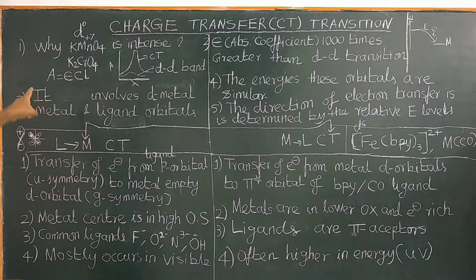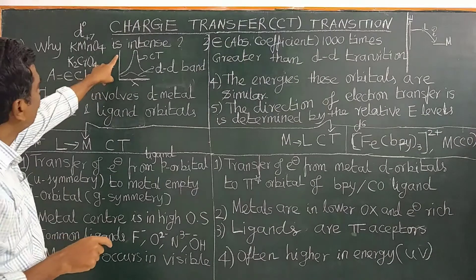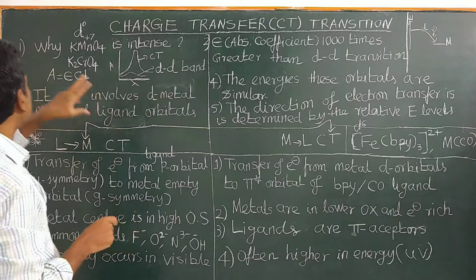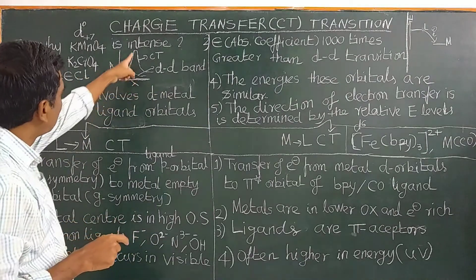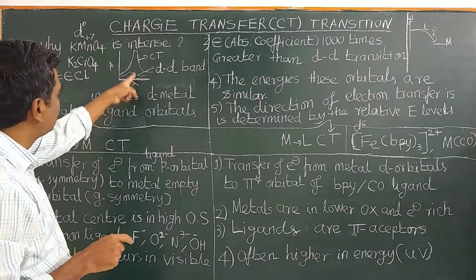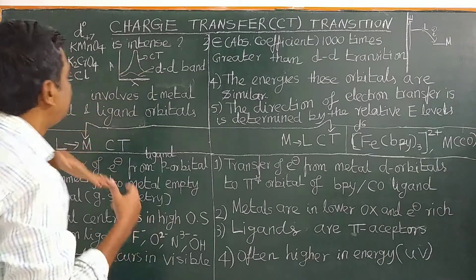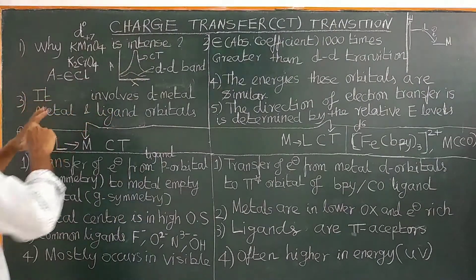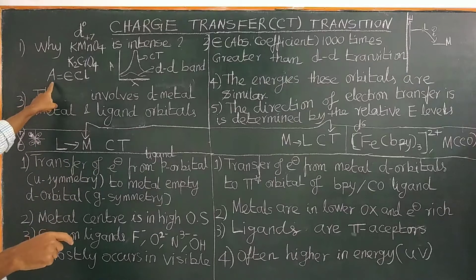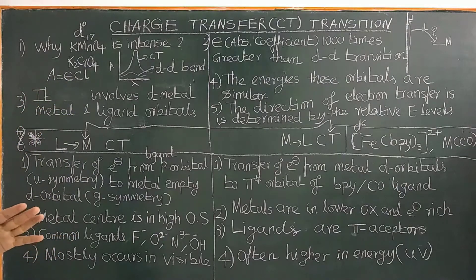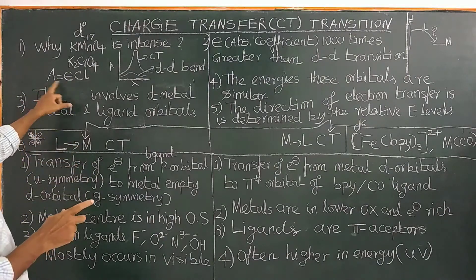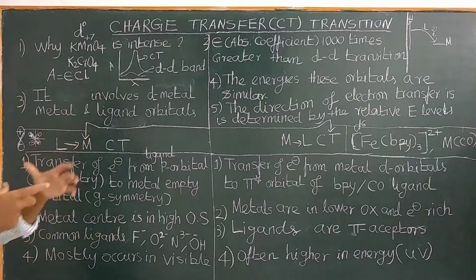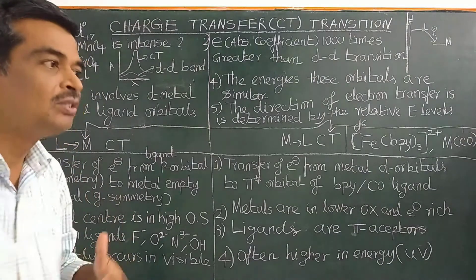Now according to Beer's law, absorbance of a colored solution is directly proportional to its concentration, for a fixed path length of the UV-visible instrument. We have plotted absorption versus wavelength — increasing wavelength. It absorbs at lambda max, the wavelength at which the intensity is greatest.